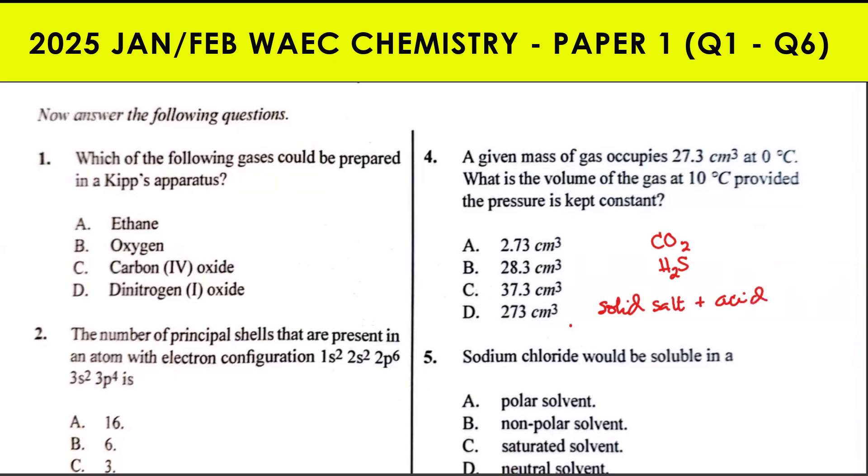Carbon dioxide can be prepared using a trioxocarbonate salt and a dilute acid. The trioxocarbonate salt will be the solid, while the dilute acid will be the liquid. The Kipp's apparatus is designed so that when the liquid gets in contact with the solid, it produces the required gas. It's meant for an intermittent supply of gases in the laboratory. So the answer to this question is carbon(IV) oxide.